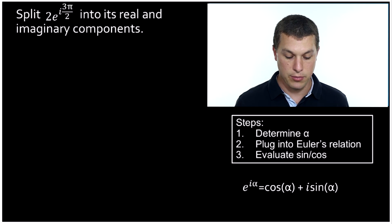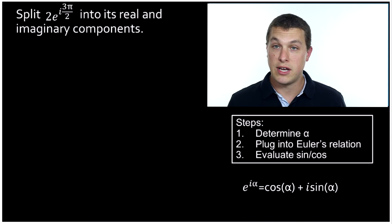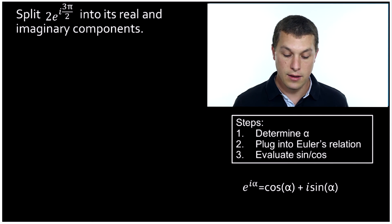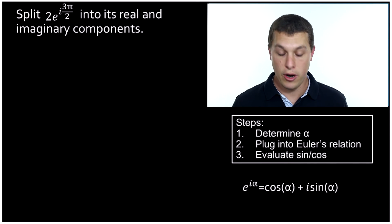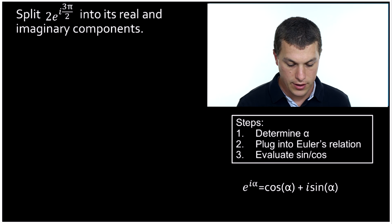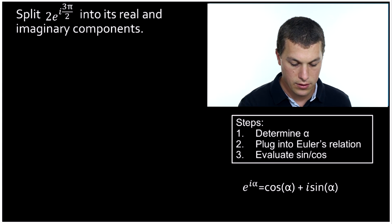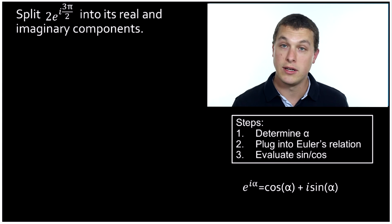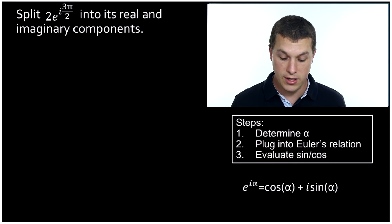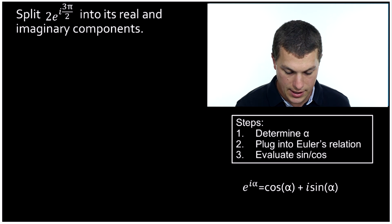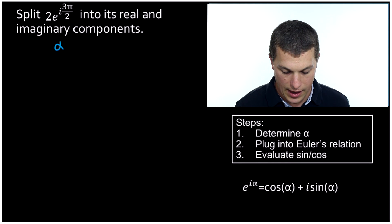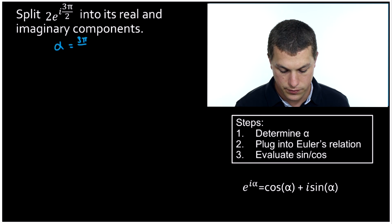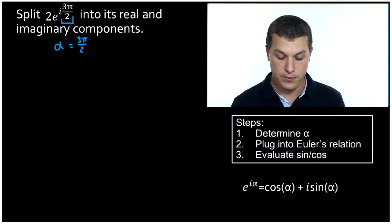Let's do one last example: two times e to the i times three pi over two. What's our alpha in this case? It's a good idea to pause the video and give this a try on your own. Alpha is three pi over two, because that's what's in our exponent besides i.